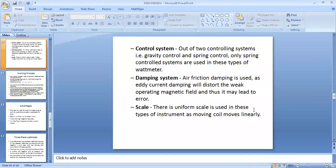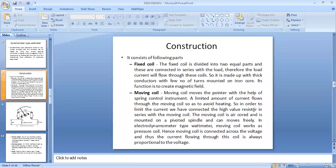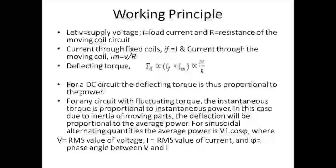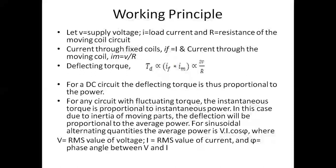In our last class we already studied the construction of the single phase watt meter. Today we will understand the working principle of the single phase watt meter. Let V be the supply voltage, I be the load current, and R be the resistance of the moving coil circuit. Now the current through the fixed coil IF equals I.